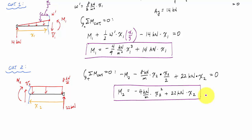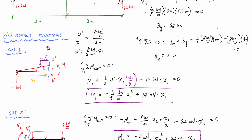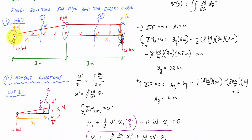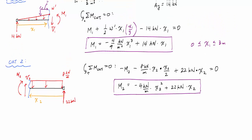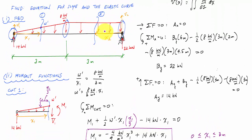It's important to identify the range for each variable. For x1, this cut applies between two discontinuities: x1 equals zero at the left discontinuity and x1 equals 3 meters at the middle discontinuity, so x1 ranges from 0 to 3 meters. Similarly, x2 is defined from 0 at the right end of the beam to 3 meters at the other discontinuity, so x2 also ranges from 0 to 3 meters.